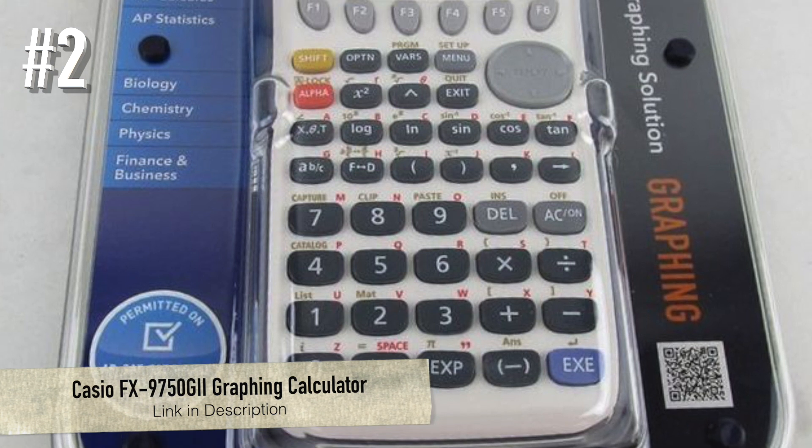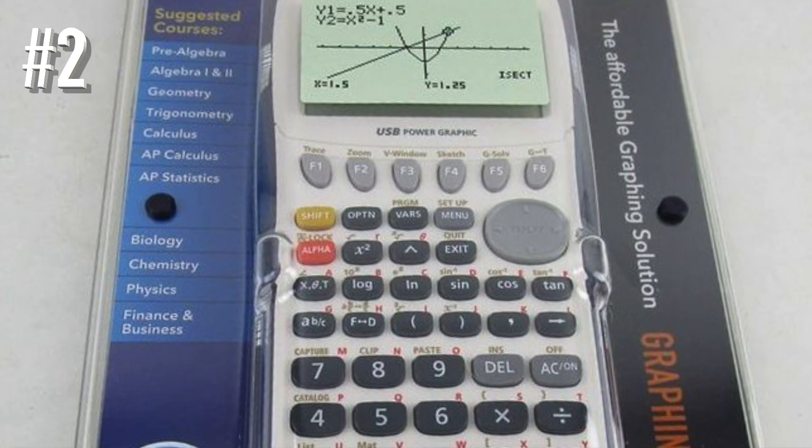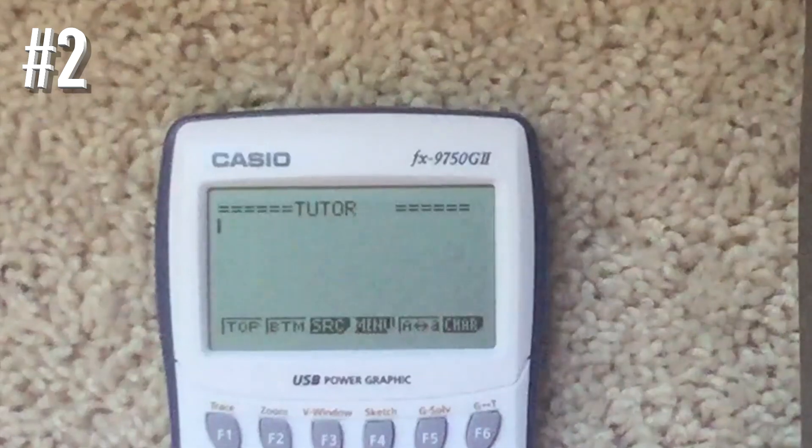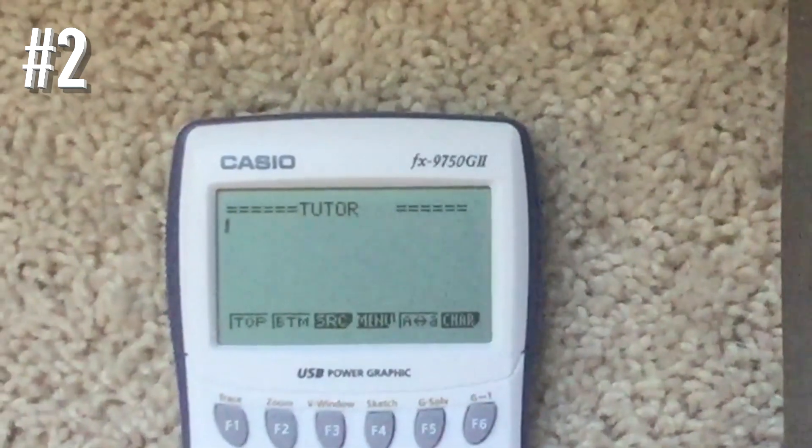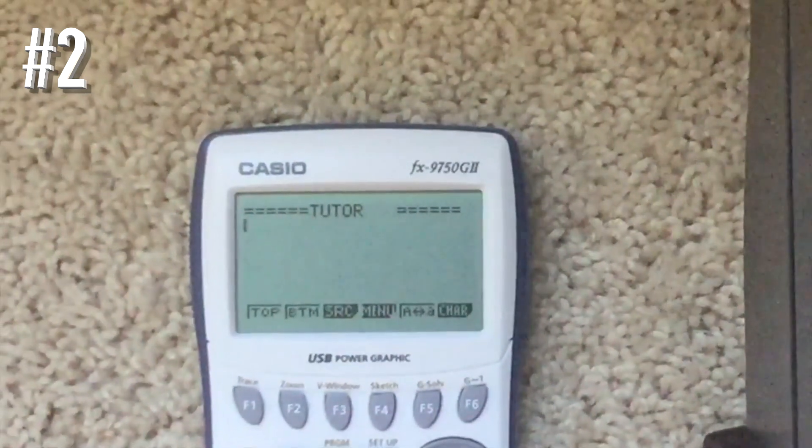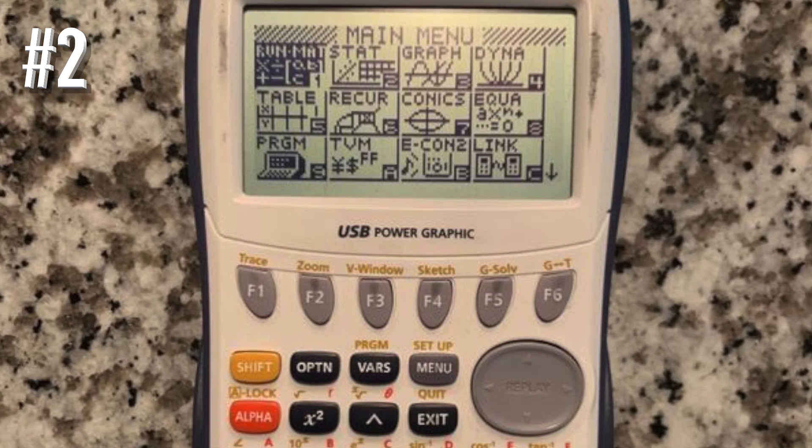Number 2. Casio FX 9750G2 Graphing Calculator. The FX 9750G2 Graphing Calculator features all the basic functionality of an entry-level graphing calculator, making it great for math coursework from pre-algebra to AP calculus and statistics, and courses in between like geometry and trigonometry.